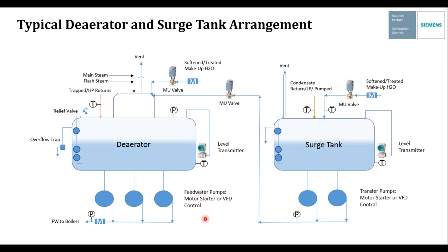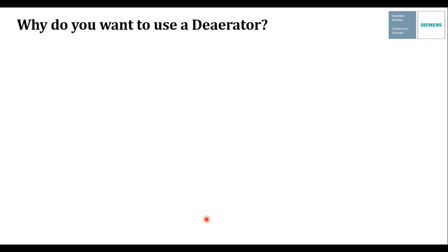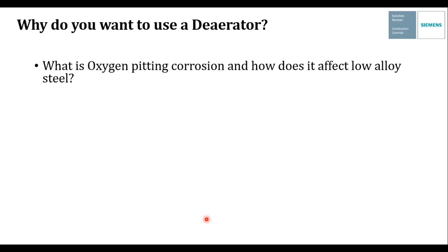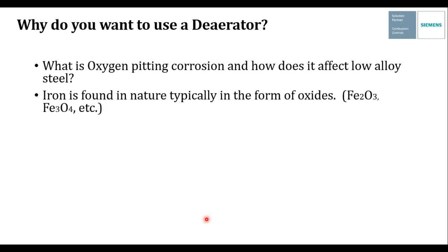The feed water pumps discharge through a flow meter and pressure transducer, and can be motor starter or VFD controlled. We'll talk about why you'd want to use a variable speed drive on your feed water system shortly. So why do you want to use a deaerator? Before we can answer that, we need to ask: what is oxygen pitting corrosion and how does it affect low alloy steel?